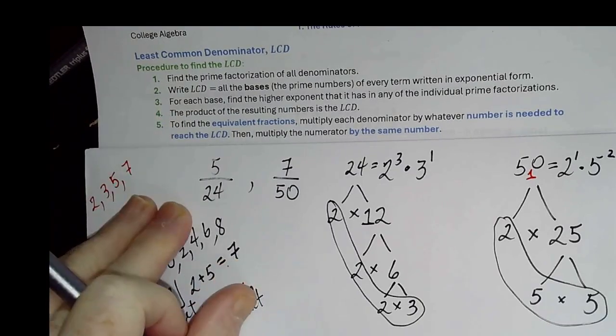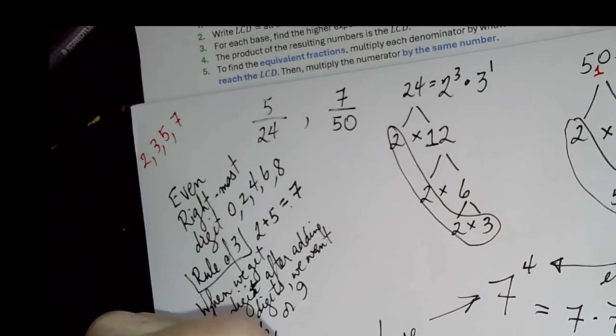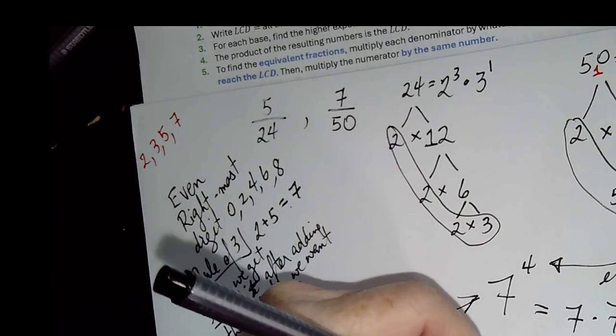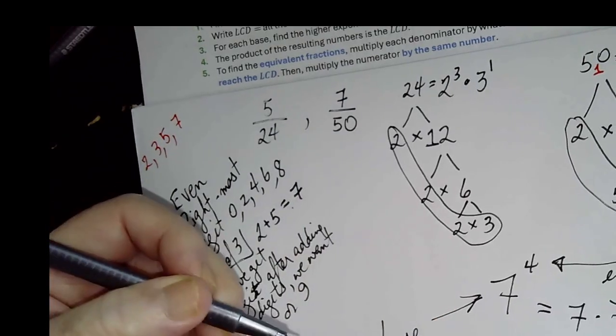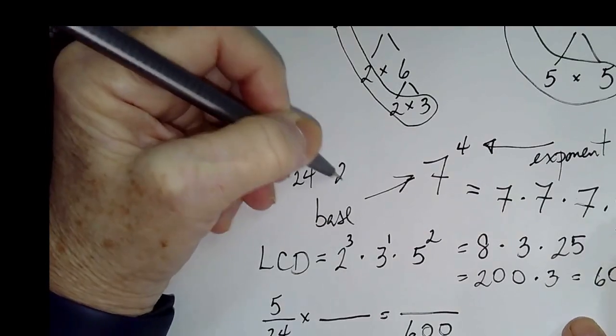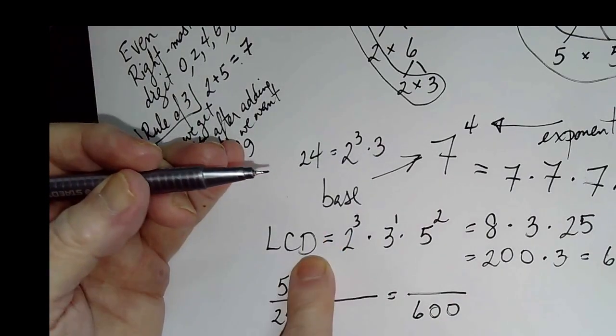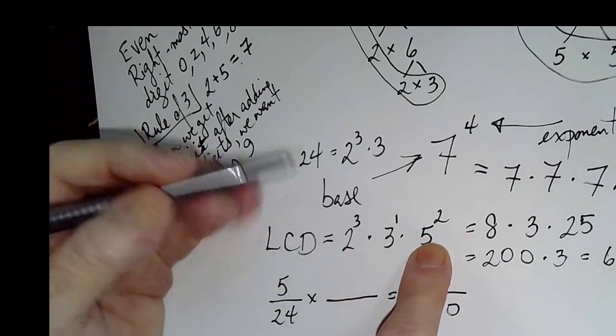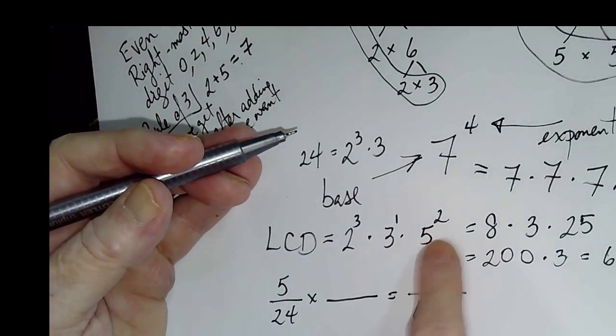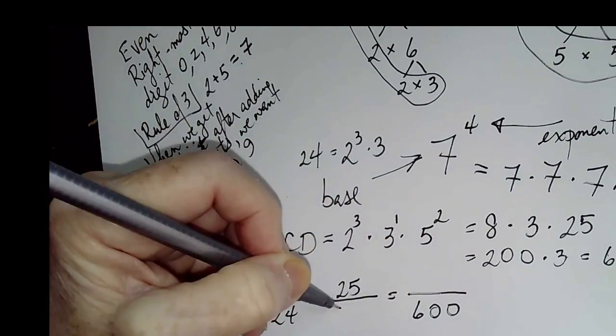And that was the last step was multiplying the numbers. And now it says to find the equivalent fractions, multiply each denominator by whatever number is needed to reach the LCD. Multiply the numerator by that same number. So we've got 5 over 24 times something. We want the denominator to be 600. And let's remember that 24 was 3 2s and a 3. If 24 was 3 2s and a 3, and the LCD is 3 2s, a 3, and 2 5s, what are we missing? Exactly right, we're missing those 2 5s. So I'm going to put, since 5 times 5, or 5 squared, is 25, I'm going to put 25 over 25.